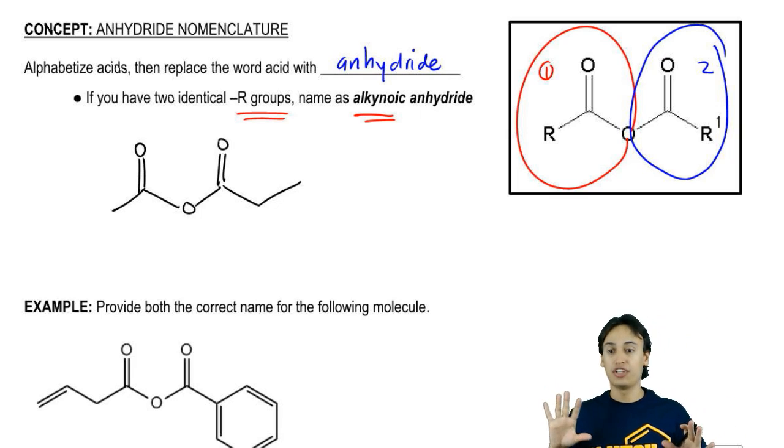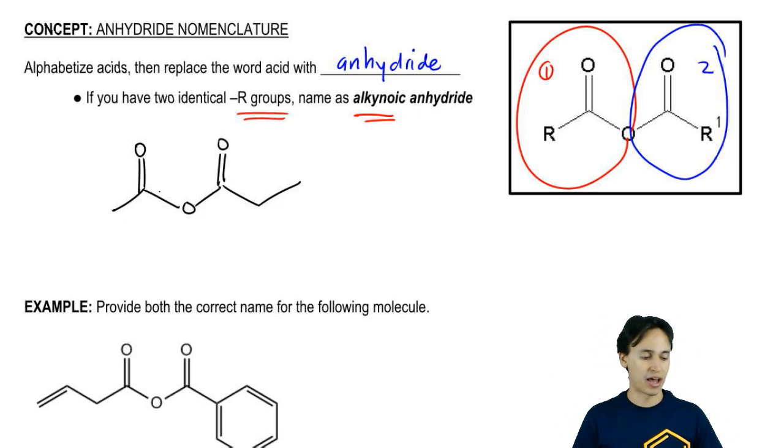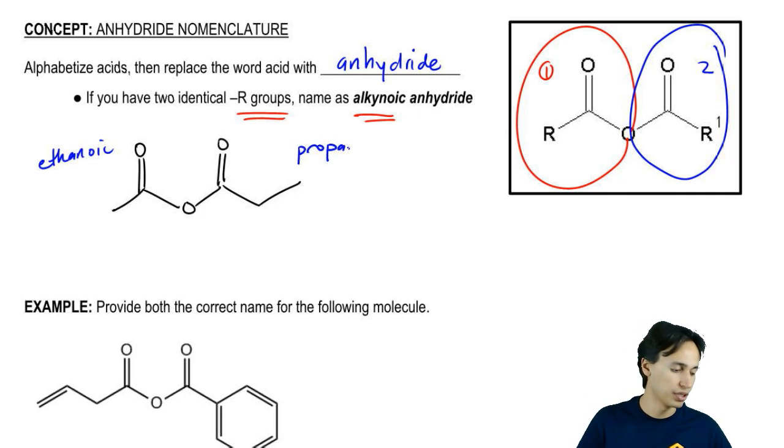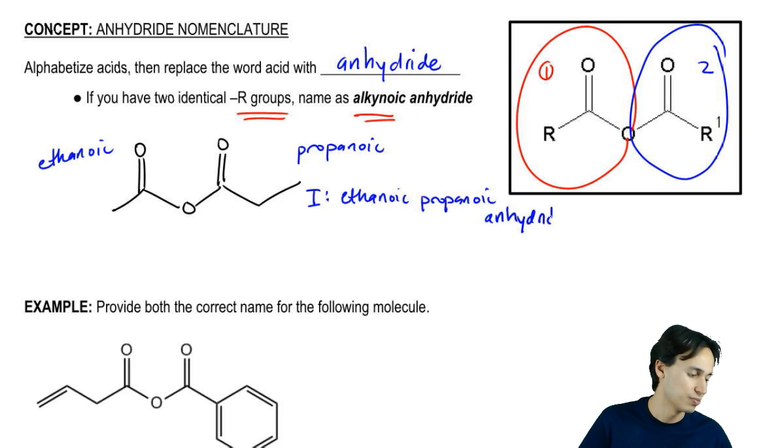This anhydride, I could name it as both the common and the IUPAC. Let's start off with IUPAC. For IUPAC, I would have ethanoic here and this is propanoic. For IUPAC, it's going to be ethanoic, propanoic, anhydride, not acid. Don't make that mistake.